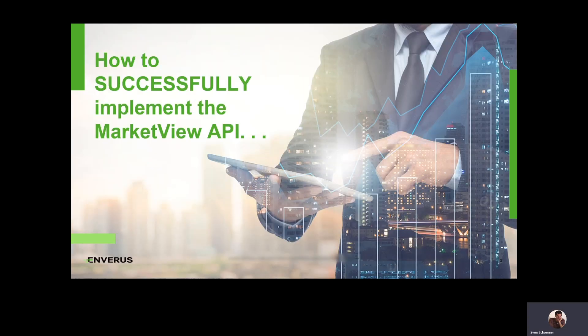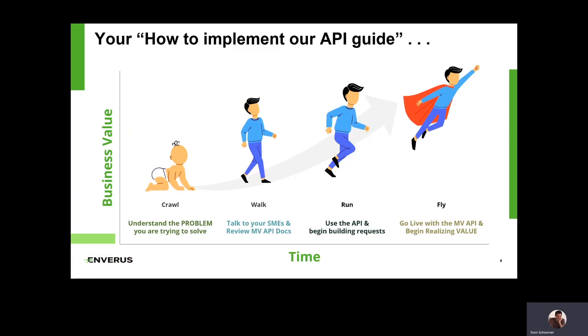How does the process work to implement the API and to try it out? It's a multi-step process starting with understanding the business problem and the business value that you want to solve, all the way to actually realizing that value and going live with the API.